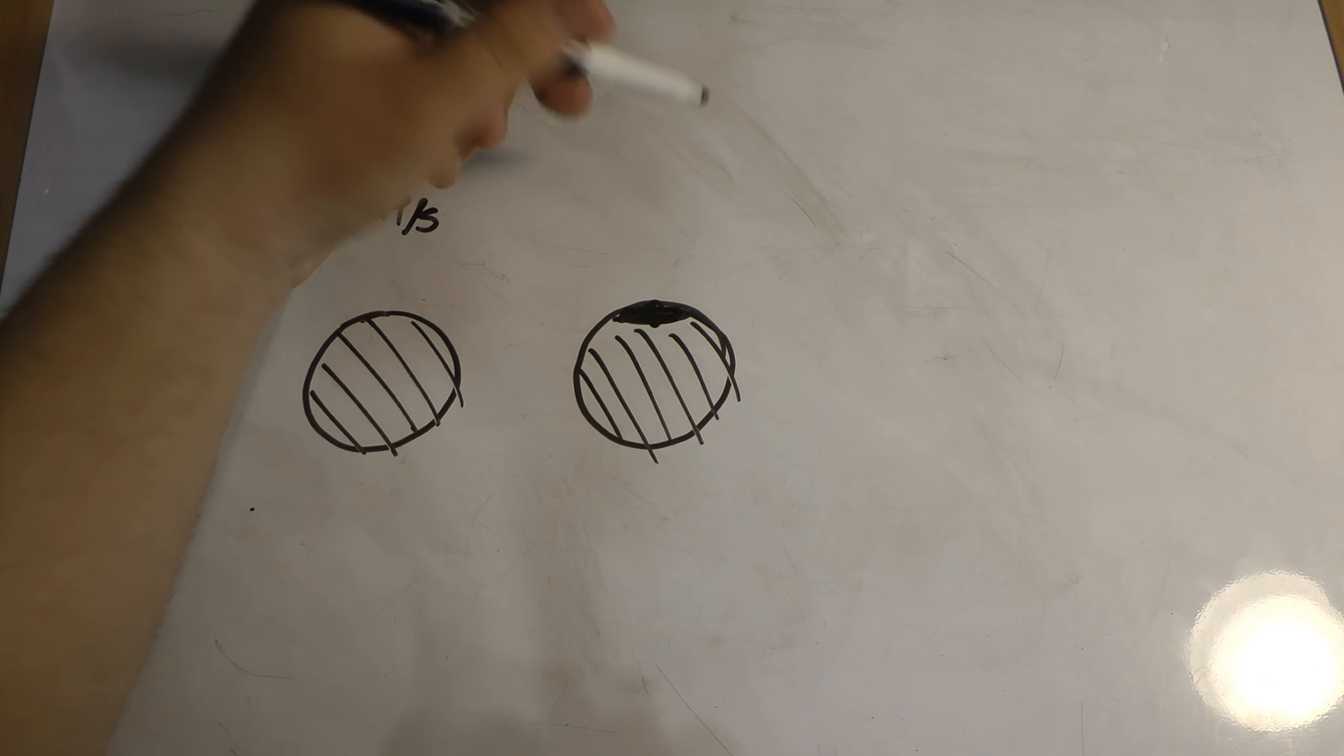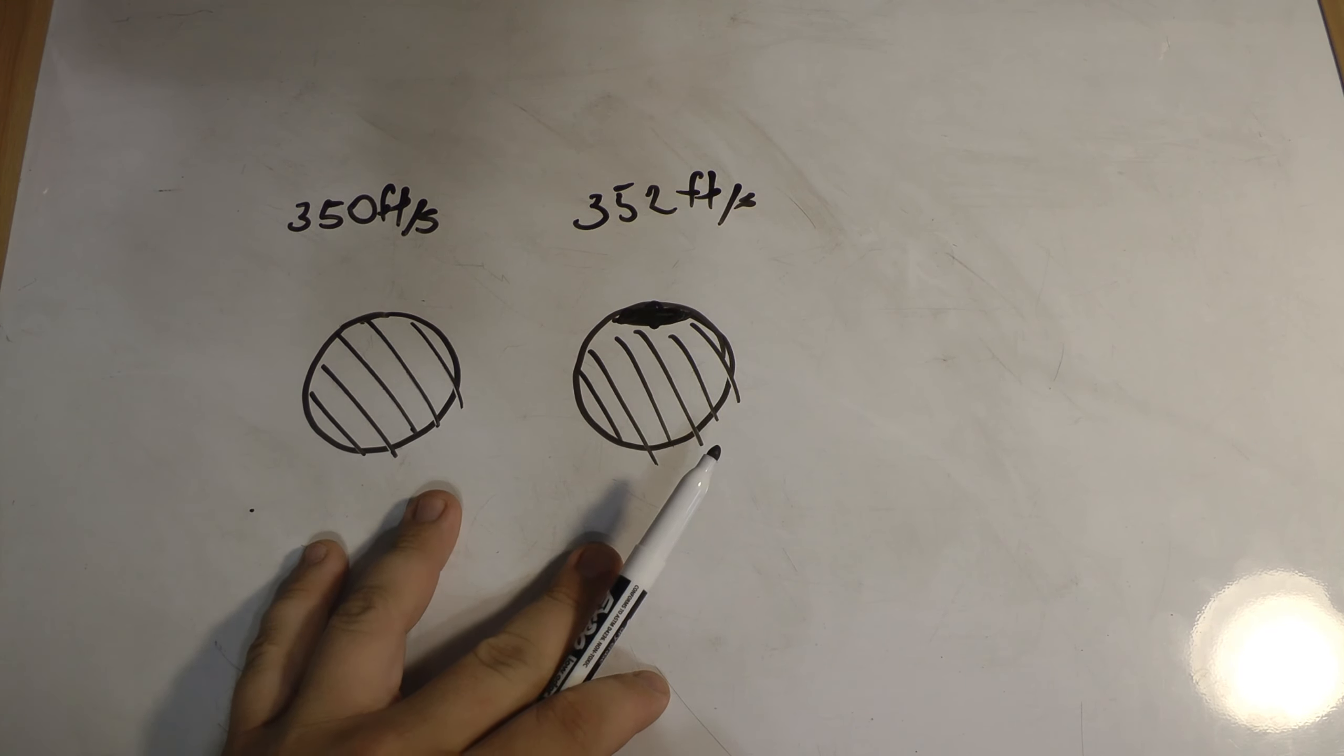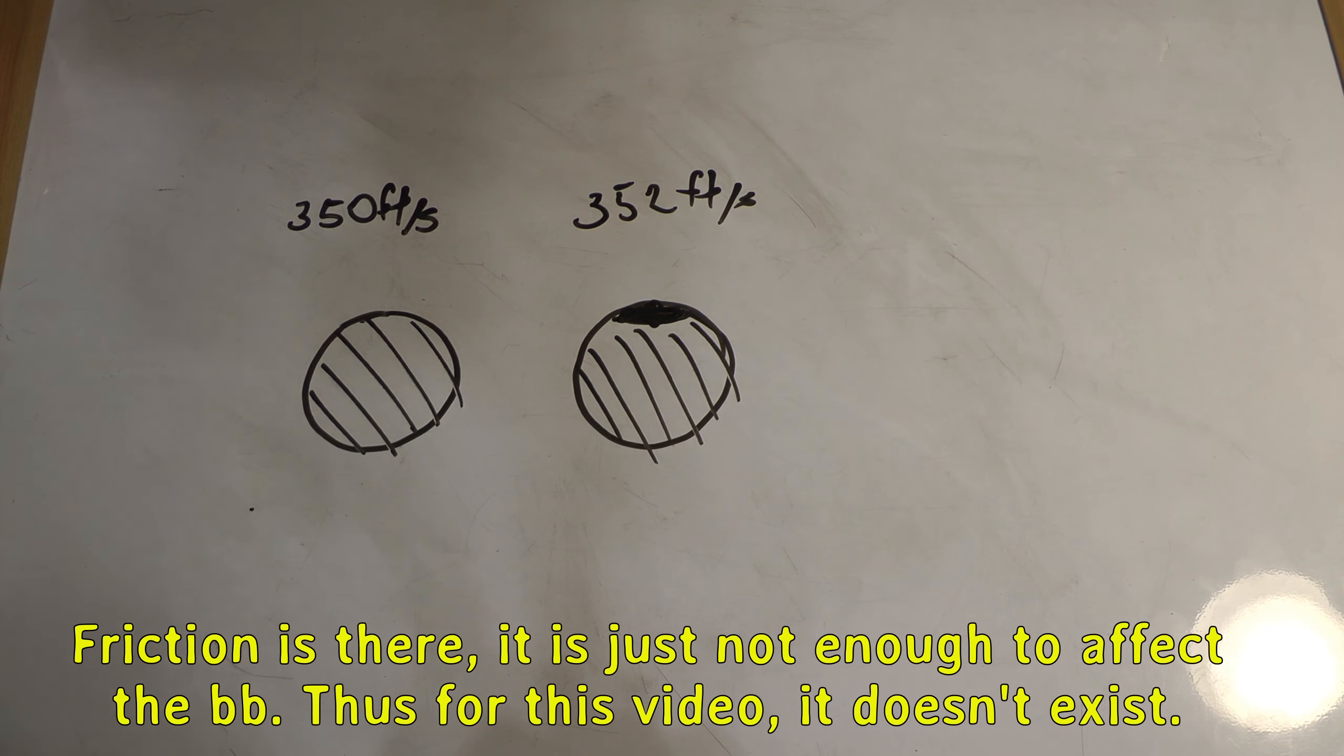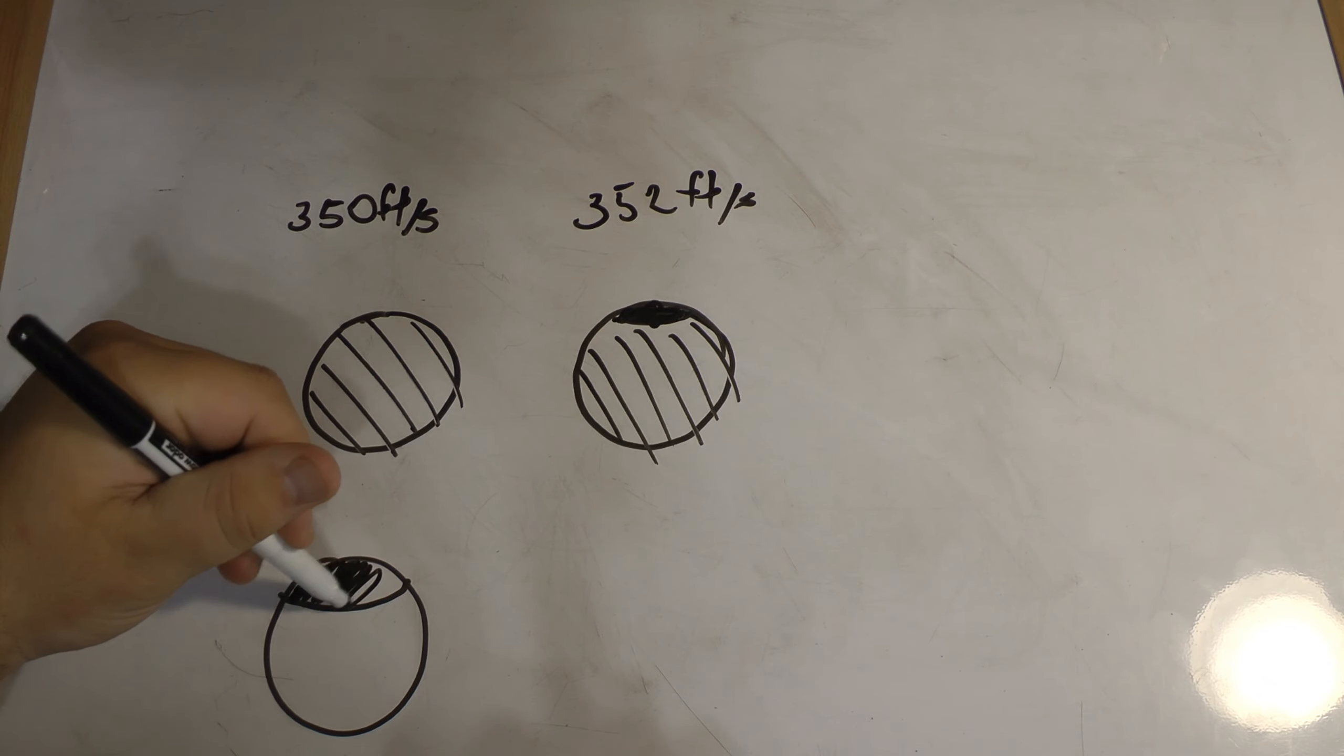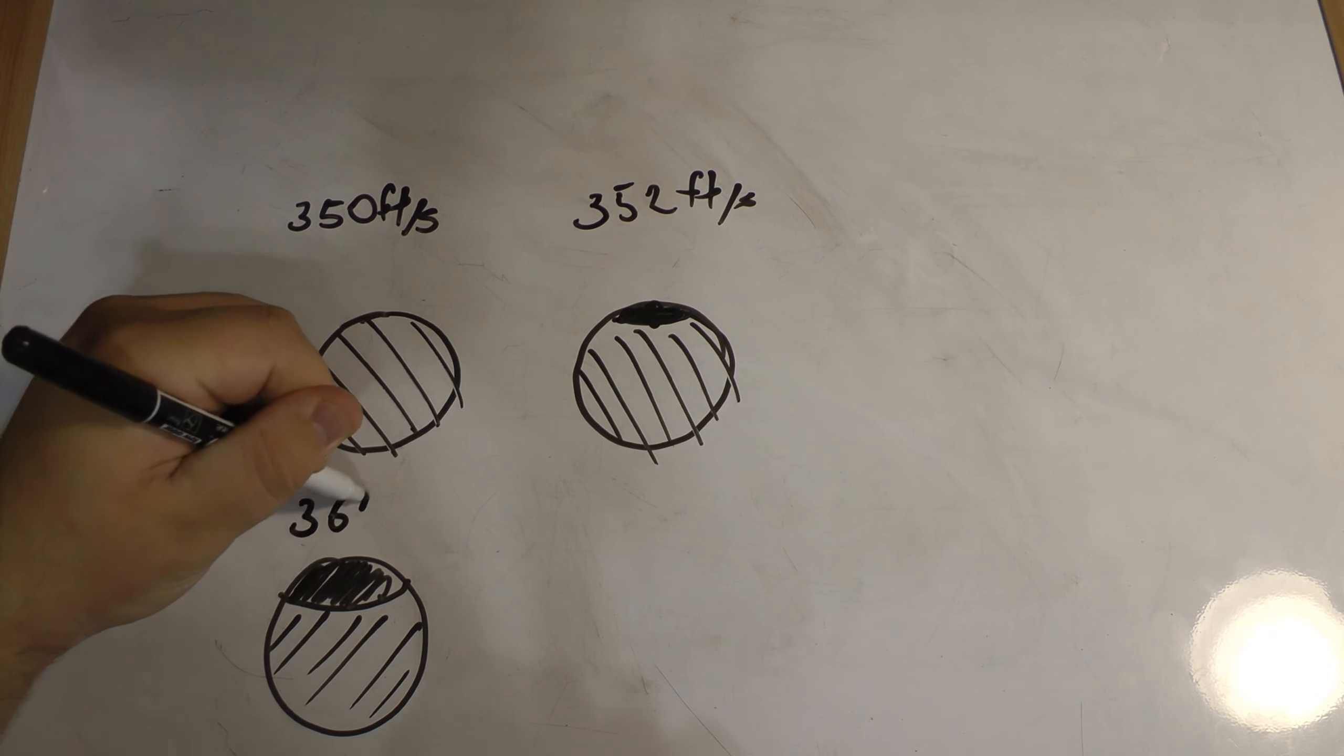Which, you know, for a .2 may only make it 352 feet per second. Now, this is with no friction. So, like, let's say you greased your hop-up rubber or something. This is with no friction. The BB is experiencing no friction. Let's say you want your BB to go even higher. Well, you're losing a lot of space there. So, now the air has to go even faster to get through the hop-up rubber. Which may get you like 360 fps.